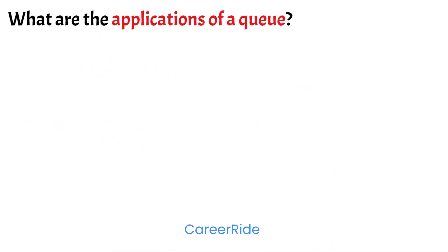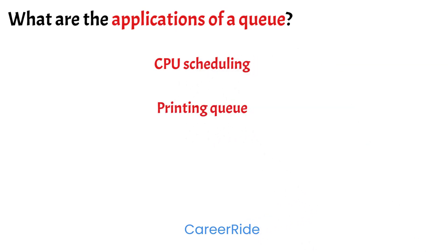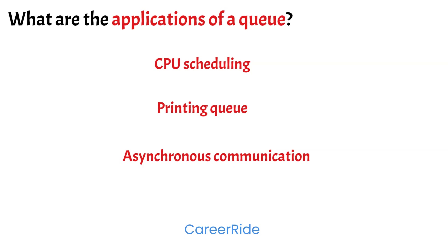Now the next question is: what are the applications of a queue? The first application is CPU scheduling — tasks that the processor needs to execute are stored in a queue and using FIFO order, tasks scheduled first are sent to the processor for processing. Next is a printing queue, where multiple documents sent to the printer are stored in a queue and the ones that arrived first are printed first. Another application is asynchronous communication — for example, in WhatsApp, if the recipient is offline, the messages sent to them are stored in a queue on the WhatsApp server.